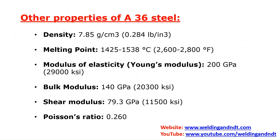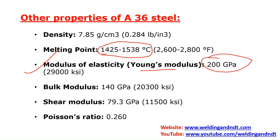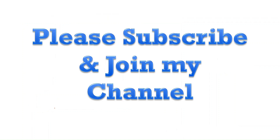Other properties of SA36 steel: density is approximately 7.85 g/cm³; melting point is 1425°C to 1532°C; modulus of elasticity (Young's modulus) is 200 GPa; bulk modulus is 140 GPa; shear modulus is 79.3 GPa; and Poisson's ratio is 0.260.